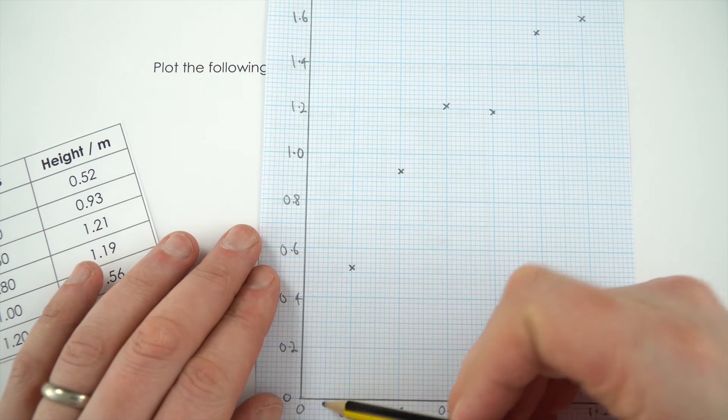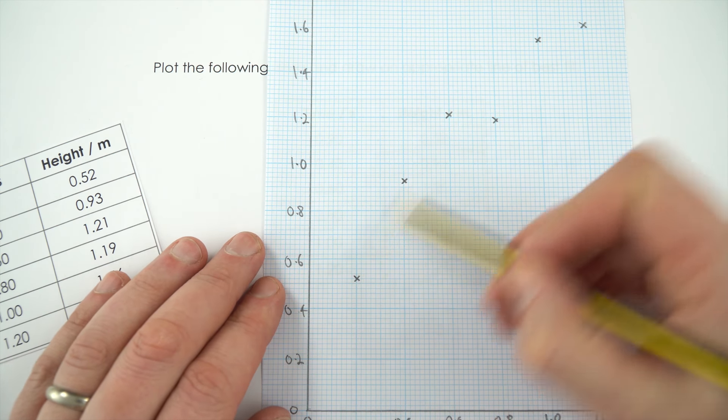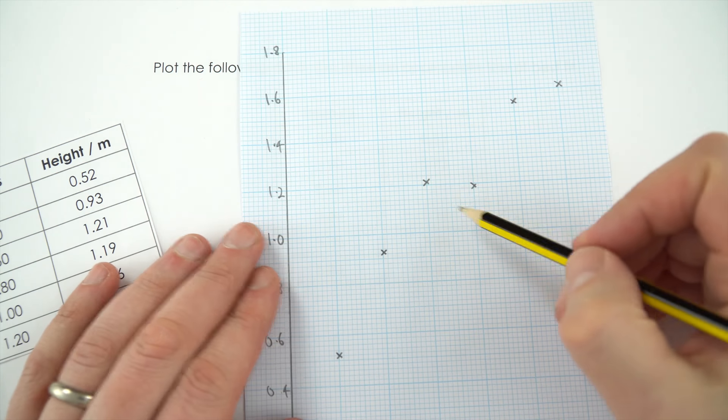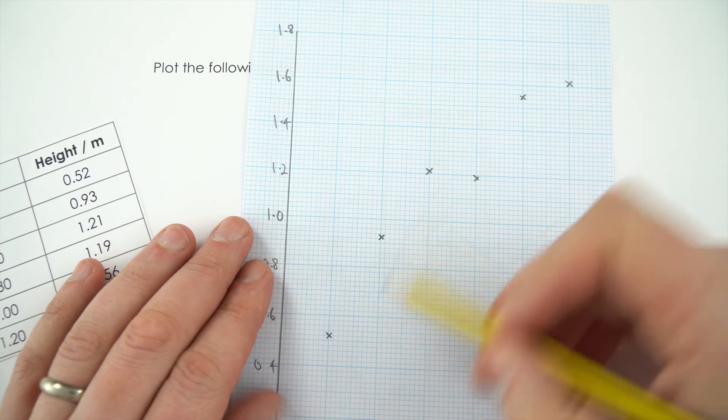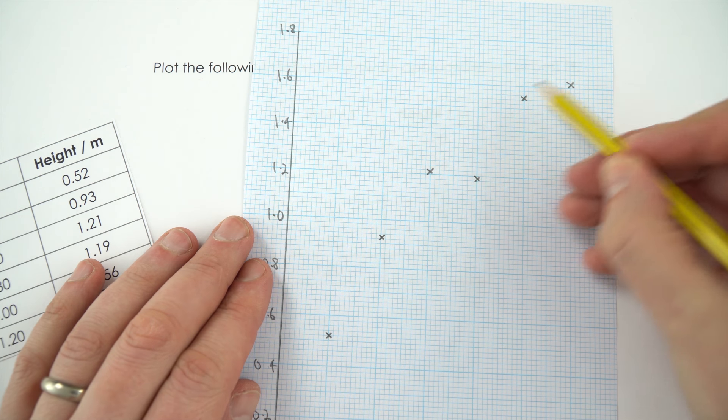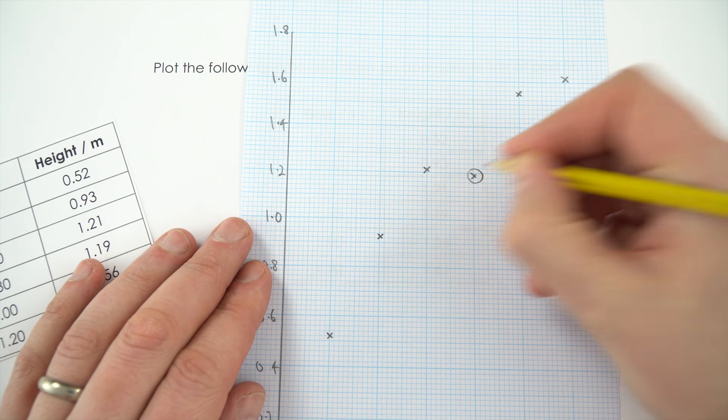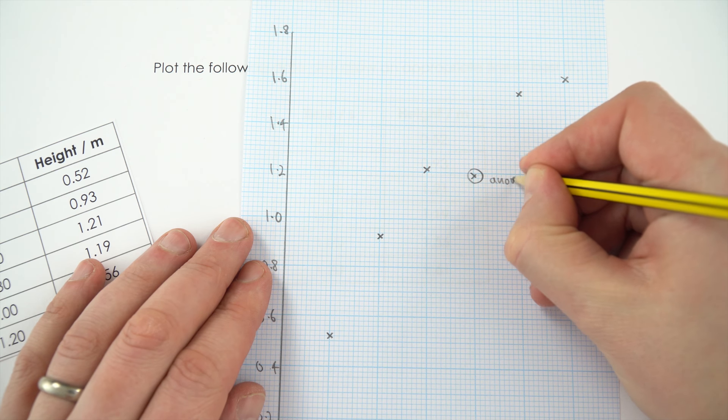Now there's definitely kind of a trend that goes upwards, maybe a bit of a curved line of best fit, but this one here doesn't really fit the pattern. So maybe this is an anomaly, or maybe this one. Looking at the pattern, it seems to be definitely a curve around there. So I say that this one here, I'm just going to circle it because this is my anomaly.